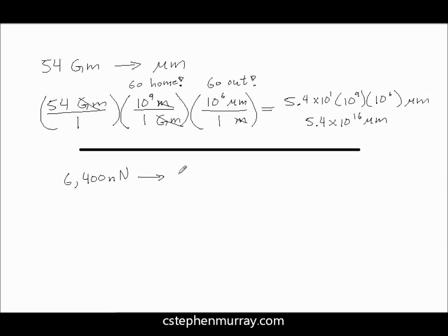Well, our first step, step 1, is to put it in a fraction. And I'm going to change this to scientific notation just right away: 6.4 times 10 to the 3rd nanonewtons over 1.